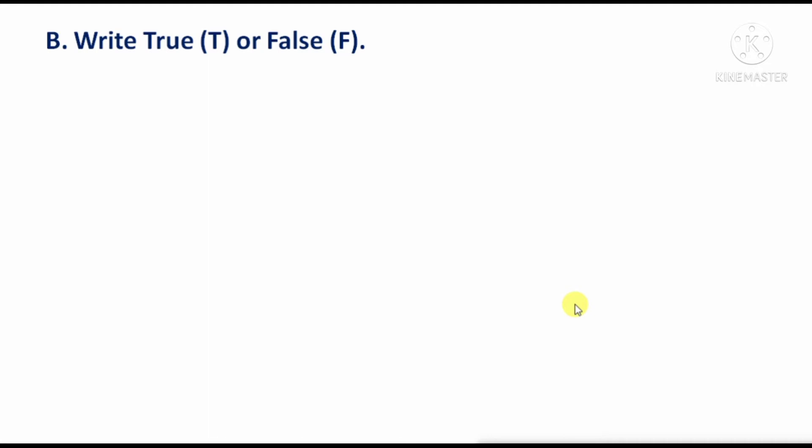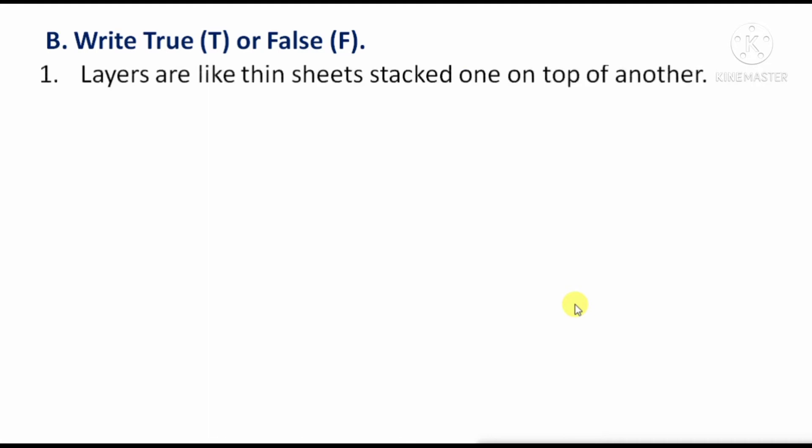True or false. First question: Layers are like thin sheets stacked one on top of another — means, layers are like thin sheets placed one on top of the other. The answer will be true.